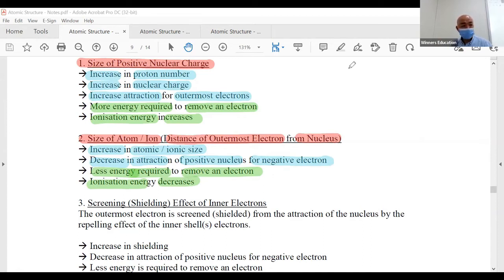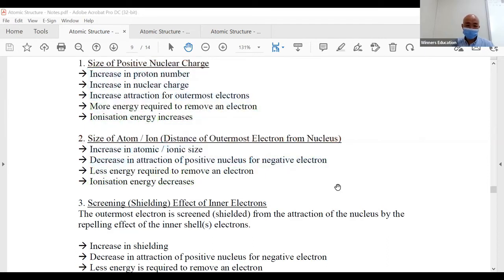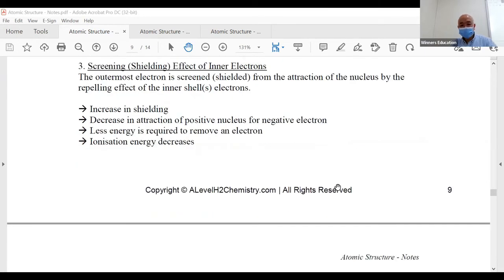The third and most important factor is the screening or shielding effect of inner shell electrons. The outermost electron that you want to remove is screened or shielded from the attraction of the nucleus by the repelling effect of the inner shell electrons.